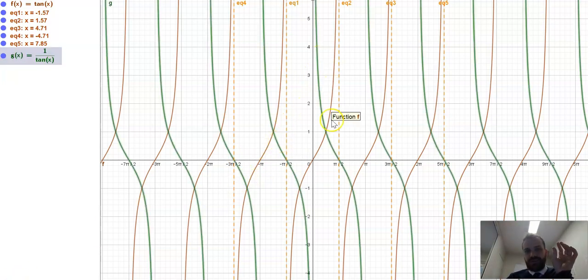Okay, here we have it in green. Now, let's sort of break this down a little bit. You can see that where the tan function, which is in brown, has a root, the green function, the 1 on tan x, has an asymptote. I haven't put in the asymptotes, but you can see an asymptote there.